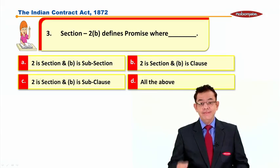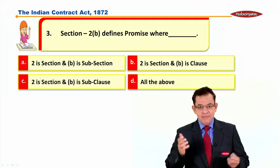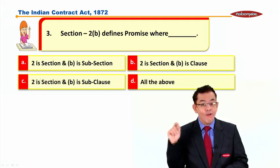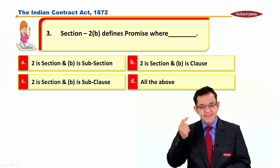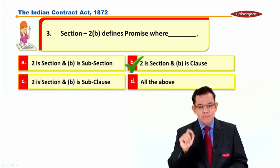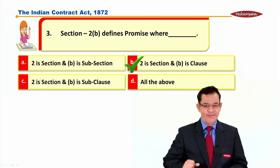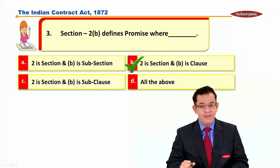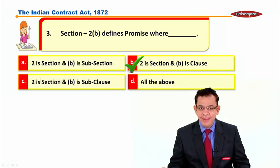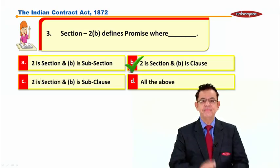And we have the third one: Section 2B defines promise. Now 2B is a legal terminology, so your pronunciation must be correct. The correct answer is B, where 2 is the section and B is the clause. So we say: Section 2, clause B defines promise. Namaste.